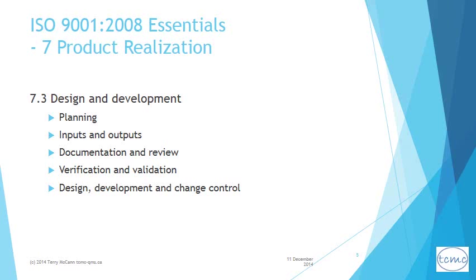In addition, the process needs to be reviewed at various planned phases or stages of development to identify problems in meeting requirements and take appropriate corrective actions. The plan also requires validation to demonstrate that the resulting product will satisfy the requirements for user application and intended use. Good control over documentation and record keeping is essential for all design and development activities such as planning, inputs and outputs, and verification and validation. It is also important to demonstrate control over design and development changes, which happen more often than not.